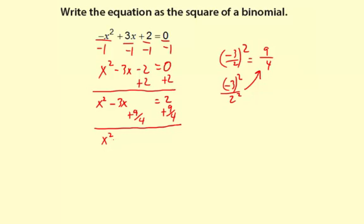So it's going to be x squared minus 3x plus 9 fourths equals, and then 2 plus 9 fourths, 2 is 8 fourths. So then 8 fourths plus 9 fourths equals 17 fourths. So the right side is going to be 17 fourths.